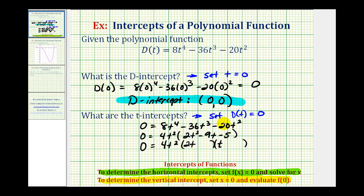We want the factors of -5 so that the sum of the inner and outer products equals -9t. Put -5 here and +1 here. We have -10t + 1t, which equals -9t, so this is factored correctly.